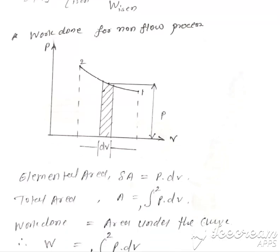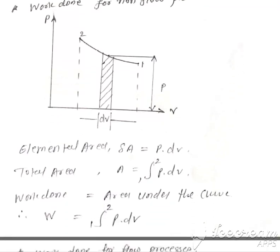Now let us derive the equation for work done for a non-flow process. First, let us understand what a non-flow process is. A non-flow process is one in which the working substance does not leave the system boundary. The process takes place in a closed system. In a closed system, the working substance does not cross the boundary. This is called a non-flow process.